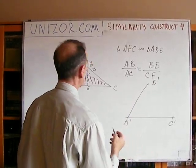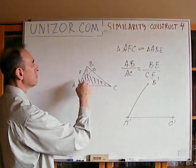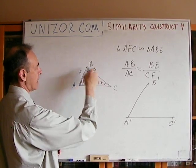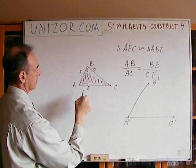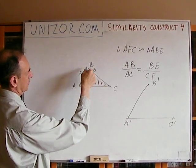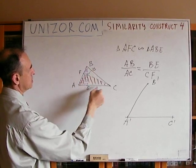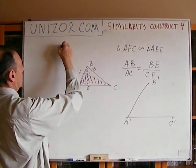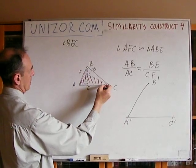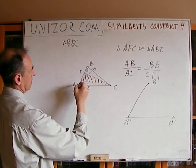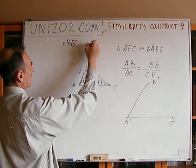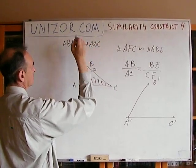Similarly, from a very similar consideration about triangles BEC and ADC — they also share the common angle at C, which means they are also similar to each other.